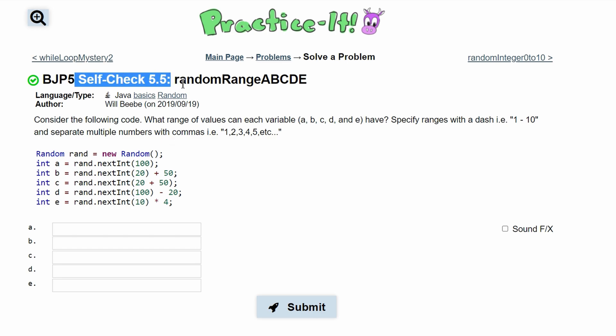For practice self-check 5.5 random range A, B, C, D, E, we're to consider the following code and this has to deal with random numbers.